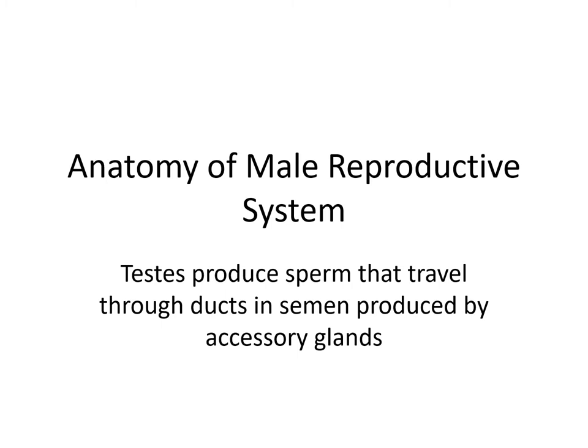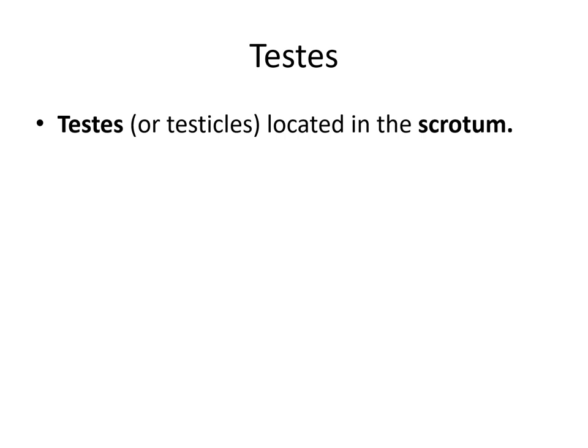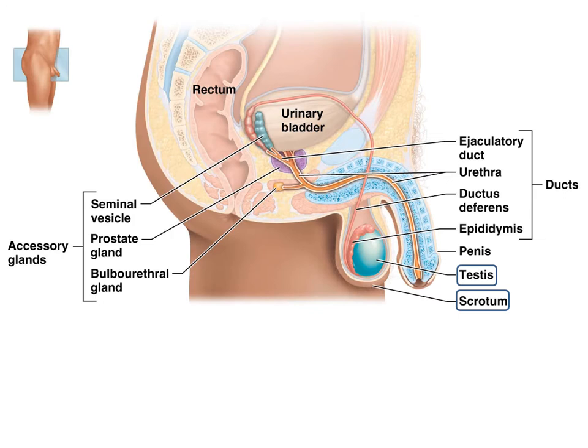Let's begin with the anatomy of the male reproductive system. The testes produce sperm that travel through the ducts in semen produced by the accessory glands. So the major sperm-forming organs are the testes, and they travel through a series of ducts in a fluid called semen secreted by accessory glands. The testes or testicles are located in the scrotum — they're externally located — because optimal sperm production is at slightly lower than normal body temperature in the sac called the scrotum.